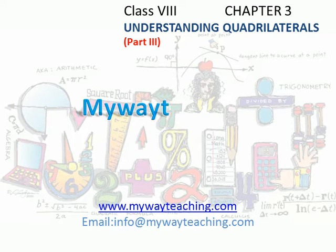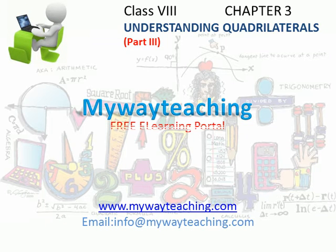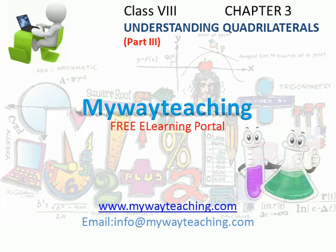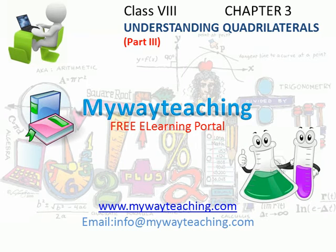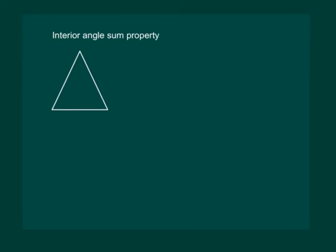Hello friends! This video is brought to you by MyWayTeaching.com. We know that for a triangle ABC, the sum of the angles is angle A plus angle B plus angle C, which is equal to 180 degrees.